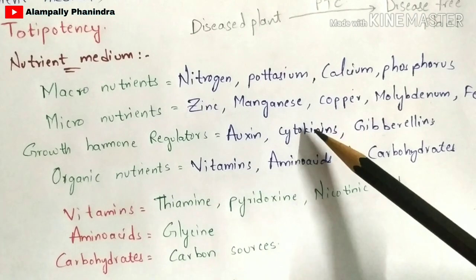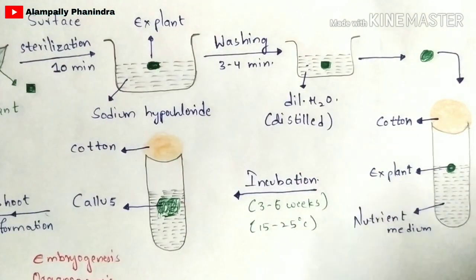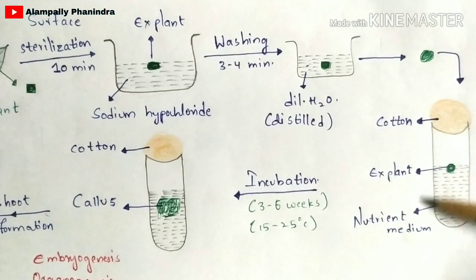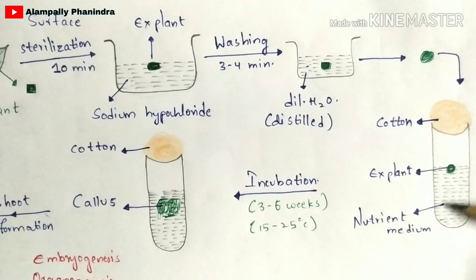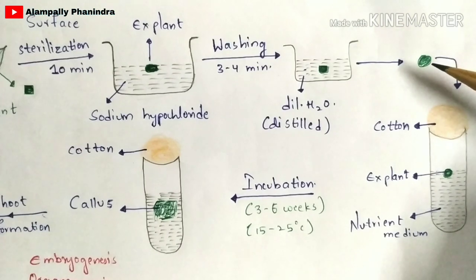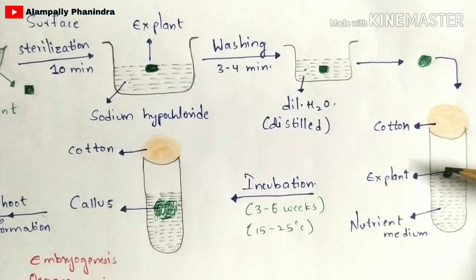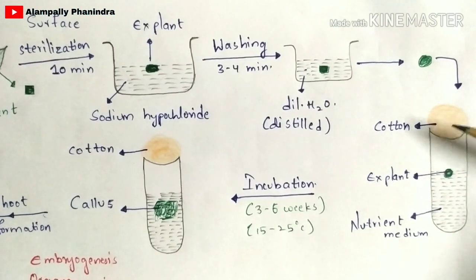Cytokinins plays a major role in cell division. You have taken a test tube and added the nutrient medium. Now the explant which is free from bacteria should be added into the nutrient medium in the test tube. Then, immediately, you have to close this test tube with cotton.